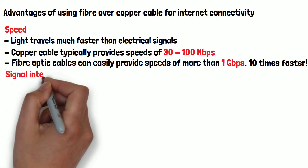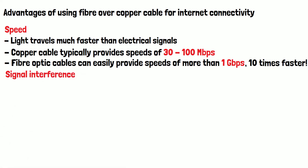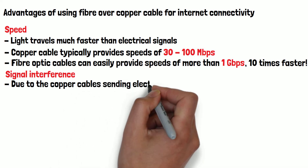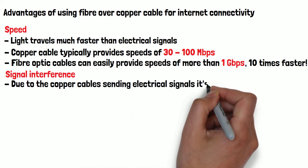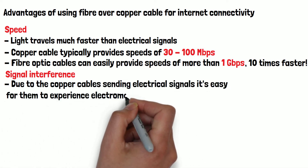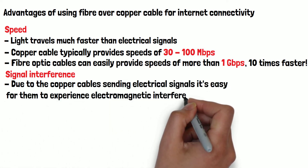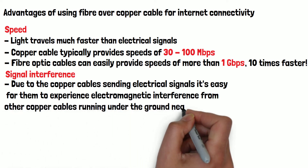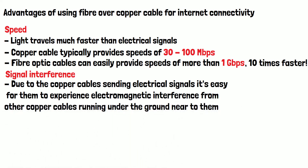Signal interference is another reason fiber optic cables are superior to copper. Due to the copper cable sending electrical signals, it's easy for them to experience electromagnetic interference from other copper cables running under the ground near to them. On fiber cables, this is impossible as the light inside the cable is the signal and the cladding stops the light escaping.